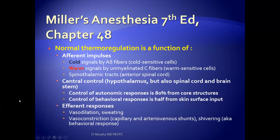Now let's look at normal thermoregulation. Normal thermoregulation is a function of afferent impulses. Cold signals are carried by A-delta fibers, and warm signals are carried by unmyelinated C fibers through the spinothalamic tracts of the anterior spinal cord. Central control resides in the hypothalamus, but there are also control mechanisms in the spinal cord and the brain stem. The control of autonomic responses is 80% from core structures, and the control of behavioral responses is half from the skin surface input.